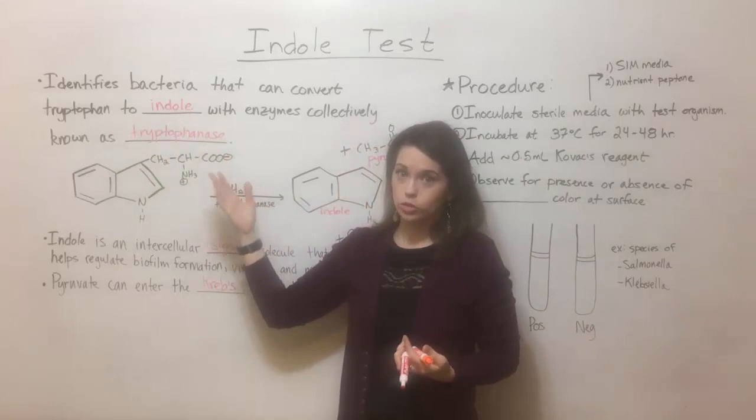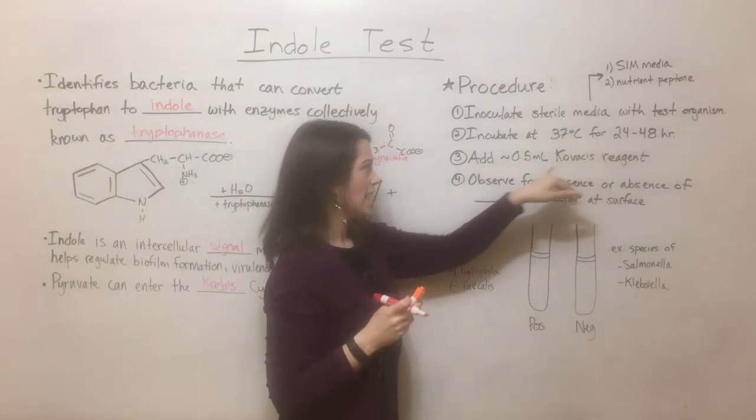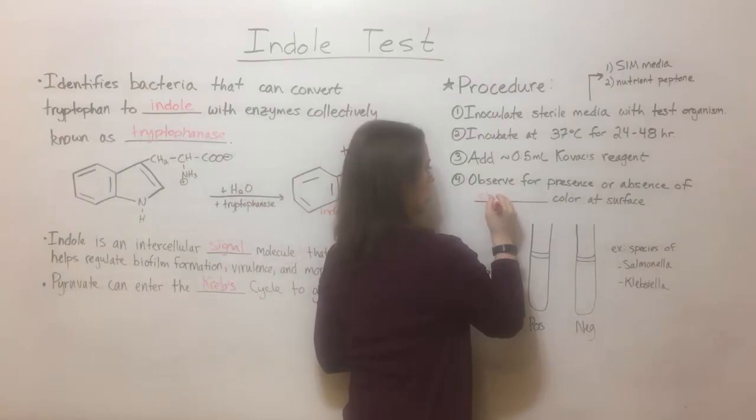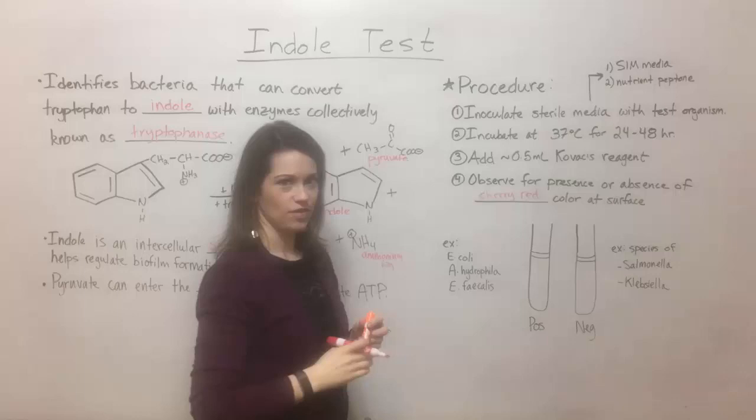Then after 24 to 48 hours, you add half a milliliter of Kovac's reagent — that's just a few drops, so it's not a lot. And then you observe for the presence or absence of a cherry red color at the surface.